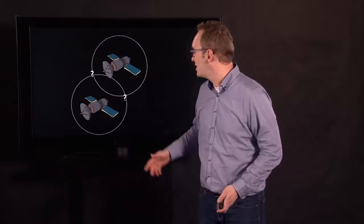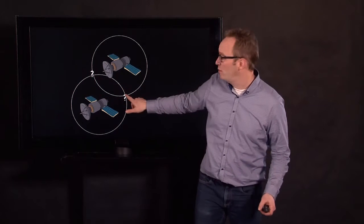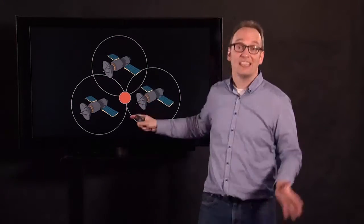So if you have two satellites, you know that you might be at one of these spots. However, to pinpoint your location, you need three satellites. And then you are at the red dot. So this is triangulation for navigation.